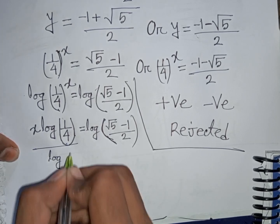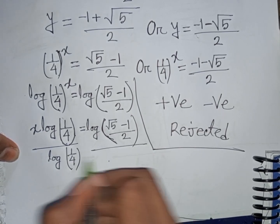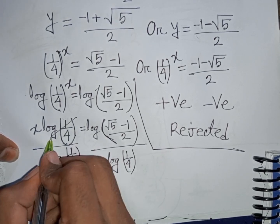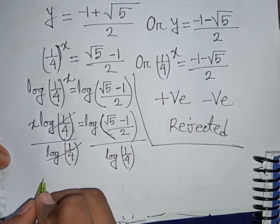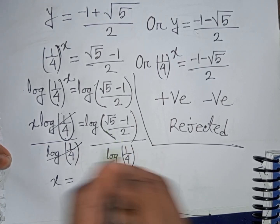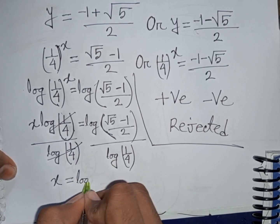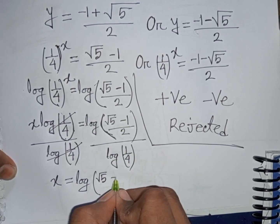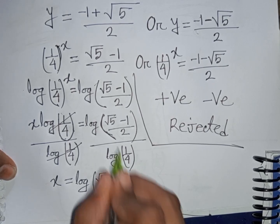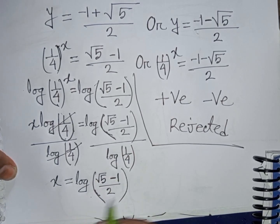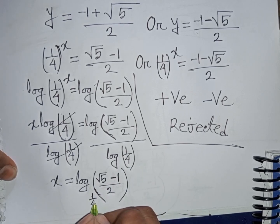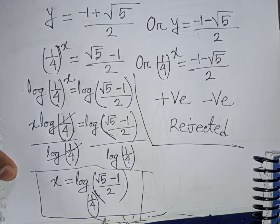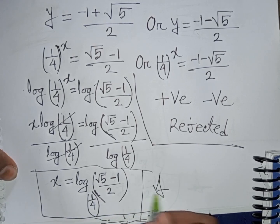Dividing both sides by log(1/4), the log(1/4) terms cancel, so x = log[(√5 - 1)/2] / log(1/4), which can be written as log base (1/4) of [(√5 - 1)/2]. This is our final answer.